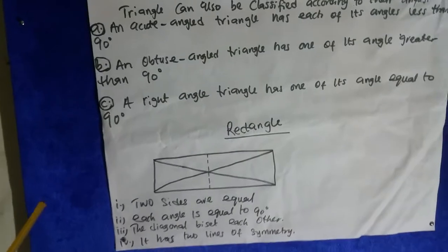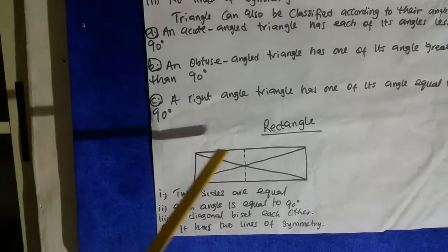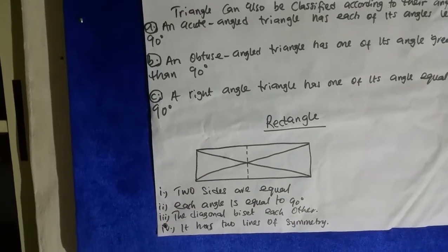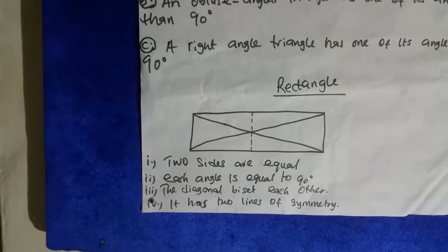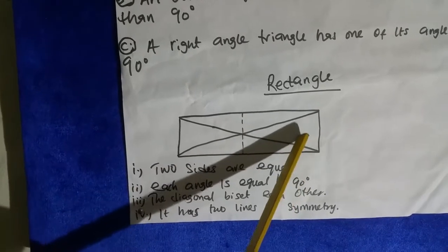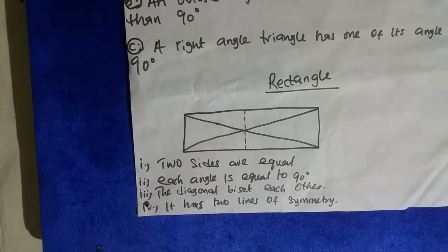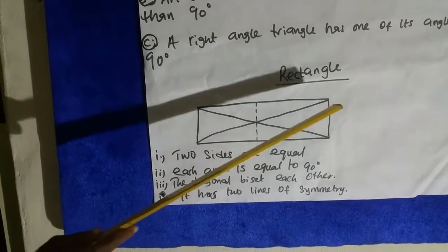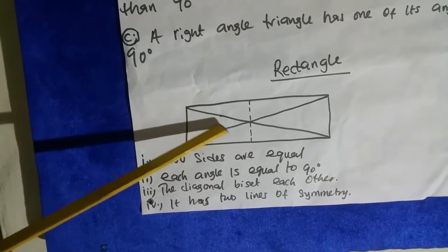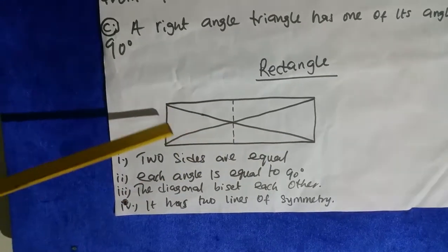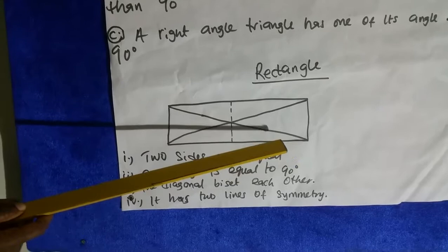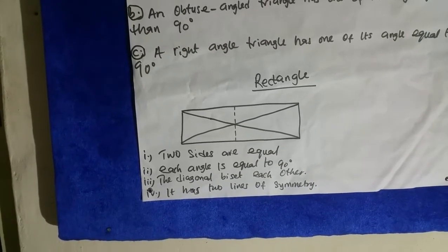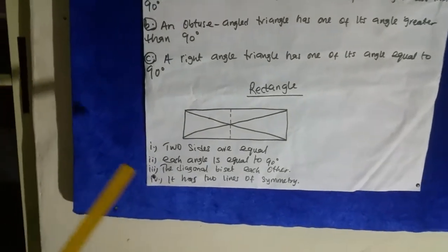Now we have the rectangle. The rectangle has two sides equal. Each angle is equal to 90°. The diagonals bisect each other — this line is known as a diagonal. It has two lines of symmetry.